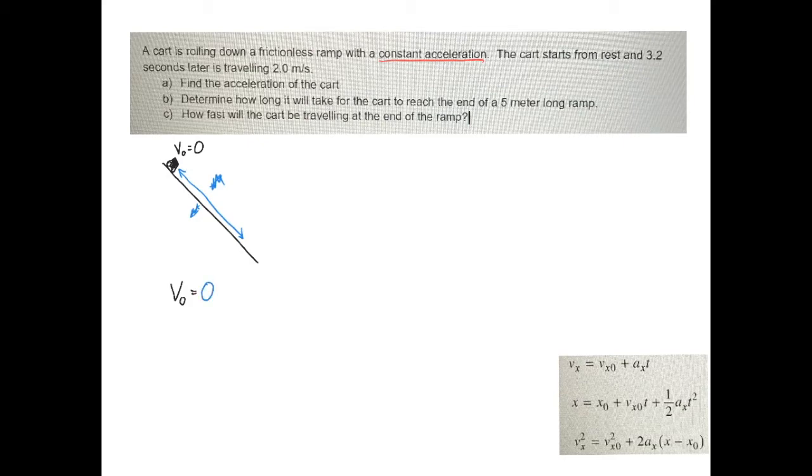It does say that there's constant acceleration, which makes it okay to use the kinematics. The cart starts from rest 3.2 seconds later. So we're looking at after time 3.2 seconds. So this point right here is 3.2 seconds later. And it's now traveling at 2 meters per second. So at this point, it's going 2 meters per second. So we're going to call that the time is from this is then my initial point and this is then my final point. That's how I'm defining it.